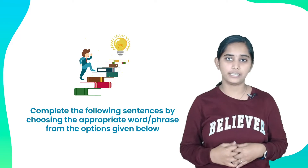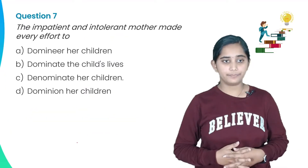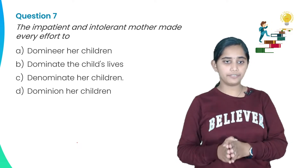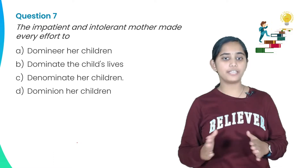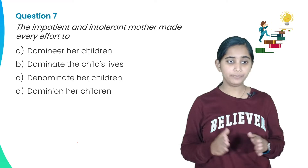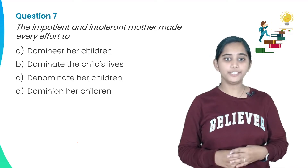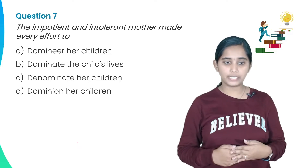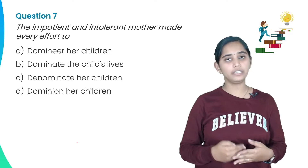We are going to discuss Question Number 7: 'The impatient and intolerant mother made every effort to dash her children.' Option A: dominate her children. Option B: dominate the child's lives. Option C: denominate her children. Option D: dominion her children.